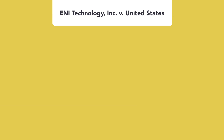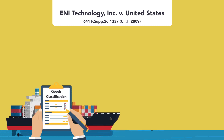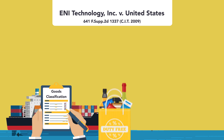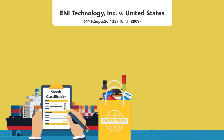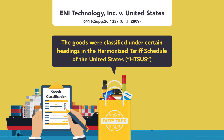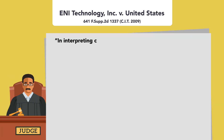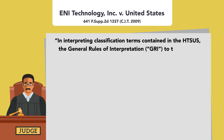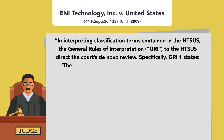In ENI Technology Inc. v. United States, 641 F-sub-2nd 1337, CIT 2009, the issue was the classification of certain imported goods as the classification would determine the duty-free status of goods. The goods were classified under certain headings in the Harmonized Tariff Schedule of the United States, HTSUS. Quote: "In interpreting classification terms contained in the HTSUS, the General Rules of Interpretation, GRI, to the HTSUS direct the court's de novo review. Specifically, GRI 1 states: 'The Table of Contents,